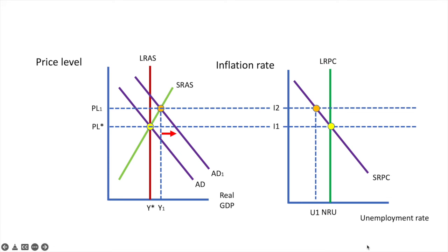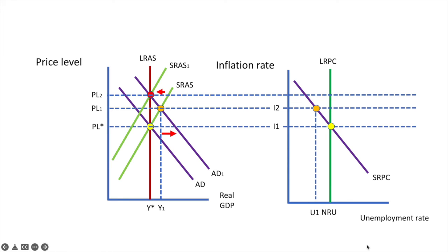Inflationary expectations cause the short-run aggregate supply curve to shift leftwards from SRAS to SRAS1. As a result, the price level increases from PL-1 to PL-2 and output returns to Y-star. This is mirrored by the short-run Phillips Curve as it shifts from SRPC to SRPC1, and the economy returns to the natural rate of unemployment at a new inflation rate of I3.